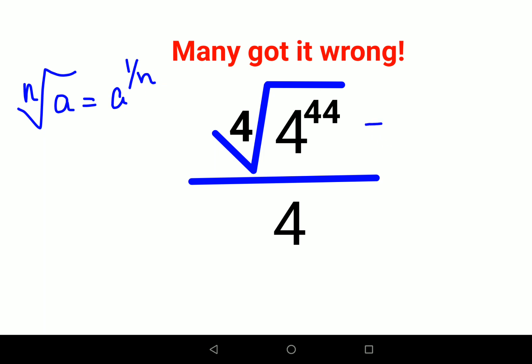So 4th root of 4 raised to 44 can be written as 4 raised to 44, the whole raised to 1 upon 4. And here you remember there is another rule of indices which says a raised to m, the whole raised to n, can be written as a raised to m into n.